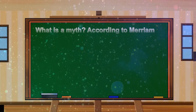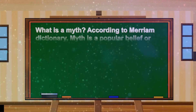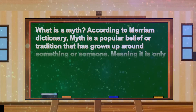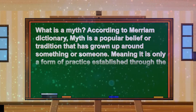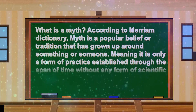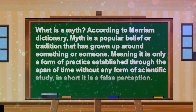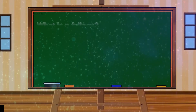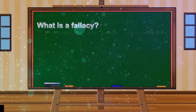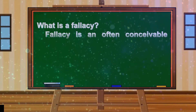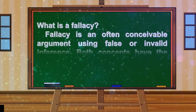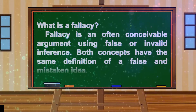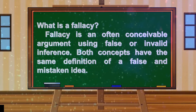What is a myth? According to Merriam Dictionary, a myth is a popular belief or tradition that has grown up around something or someone, meaning it's only a form of practice established through the span of time without any form of scientific study. In short, it is a false perception. What is a fallacy? A fallacy is an often plausible argument using false or invalid inference. Both concepts share the same definition of a false and mistaken idea.